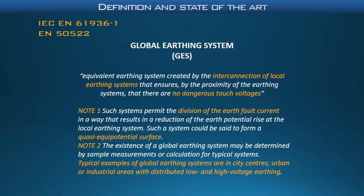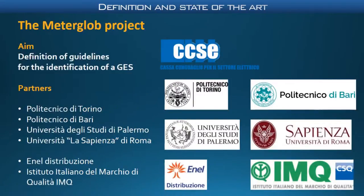Two main effects of a GES come out from its definition. The first one is the division of the earth fault current among the interconnected earthing systems. The second is that a GES forms a quasi-equipotential surface. However, even if standards provide a GES definition, they do not give any practical guidelines to identifying it. The result is that only few GES are certified, whereas if a clear procedure is provided, it will be possible to save time and money, with a great benefit for both users and MV distribution system operators. For this reason, Cassa Conguaglio per il settore elettrico funded a research project called Metaclub to overcome this lack.